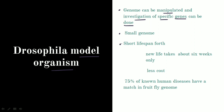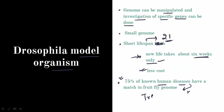The next point is that Drosophila has a very short lifespan — a maximum of 21 days, depending on temperature. New life takes only about six weeks to develop, and because it requires very little time, the cost of handling Drosophila is very low. Additionally, 75 percent of non-human diseases have a match in the fruit fly genome, making the study of those diseases easier and helping find treatments that can then be applied to humans.